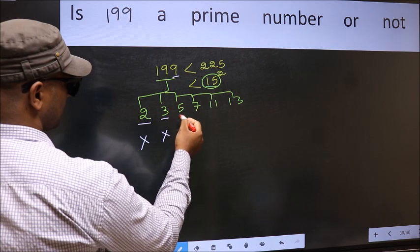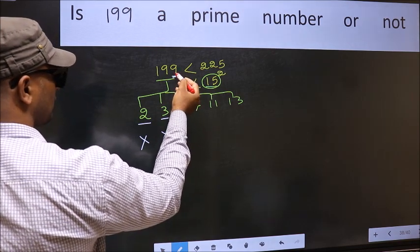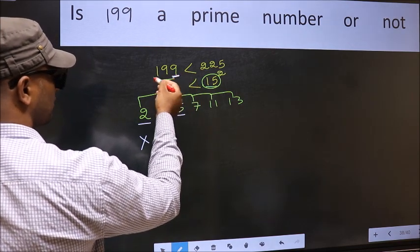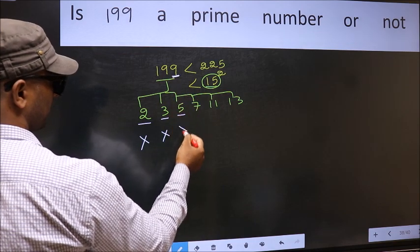Next, number 5: the last digit is neither 0 nor 5, so 199 is not divisible by 5.